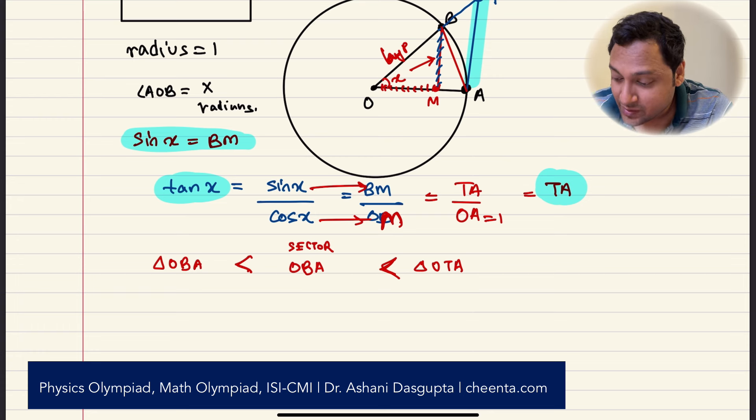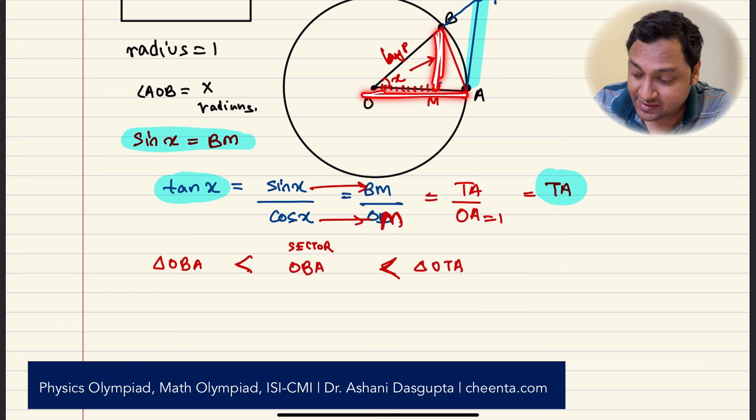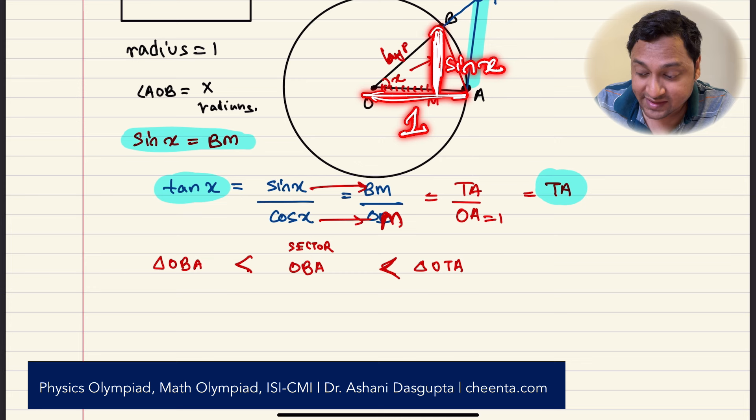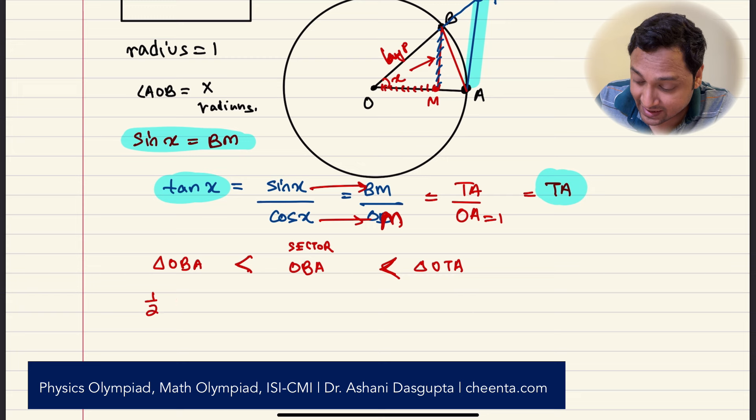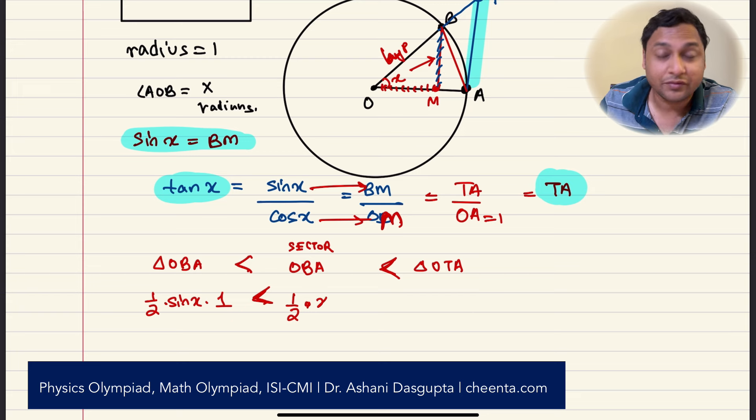So what is the area of triangle OBA? Well, it's half base into height. So base is 1 and height is sine of x. We know that BM is sine of x. We just found it out. So this is half sine of x into 1. That is what triangle OBA is. Sector OBA, you know, the sector area formula is half into angle into radius. Again, radius is 1. Half into angle into radius.